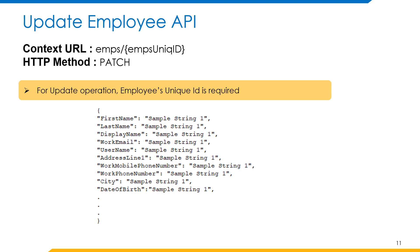UpdateEmployee API is used to update an employee record. The HTTP method used for this API is PATCH. For this API we need the employee's unique ID, which is the hash key of the attributes making up the composite key for the employee resource and used to uniquely identify an instance of employees. In the request body we will be sending attributes such as first name, last name, display name, work email, username, address line 1, work mobile phone number, work phone number, city, and many more.